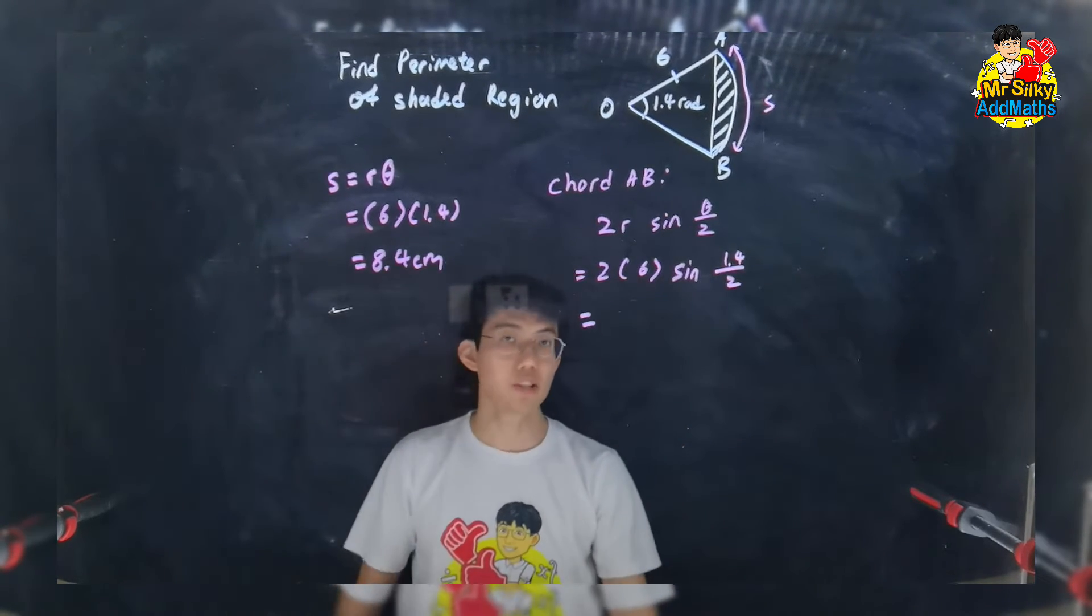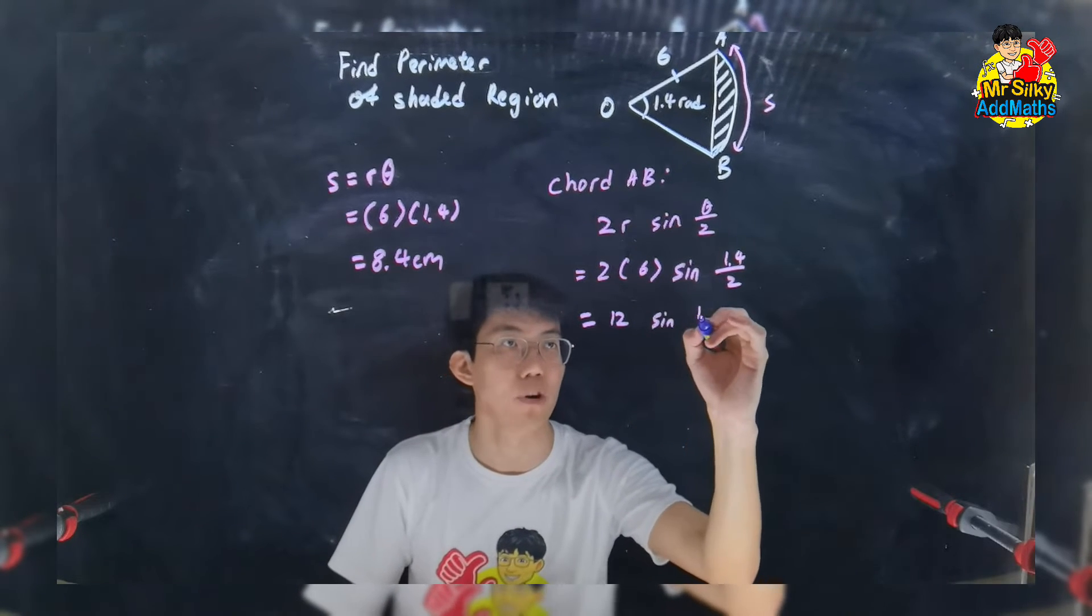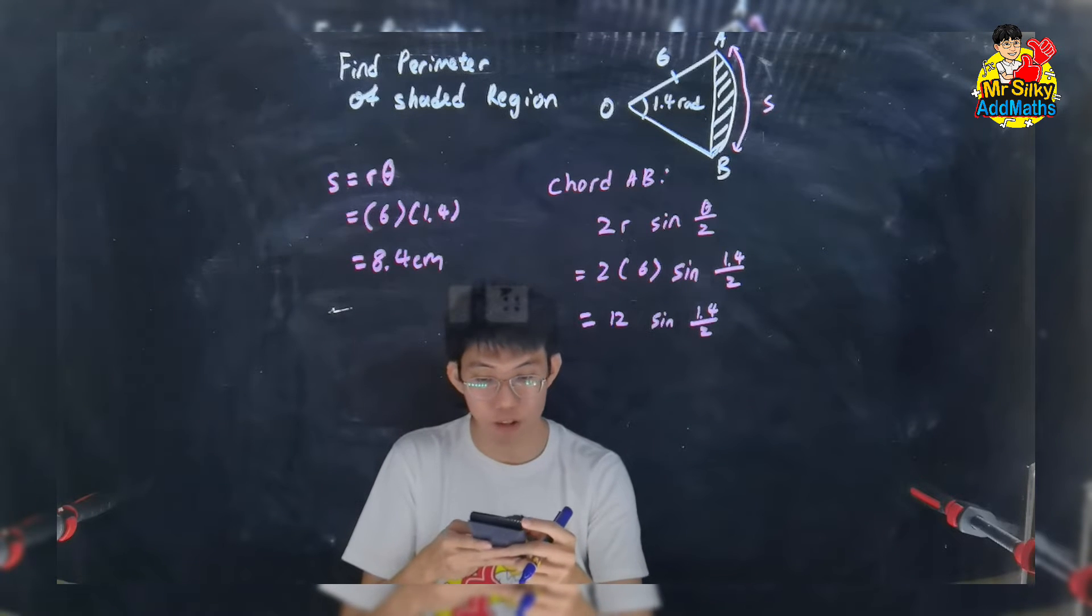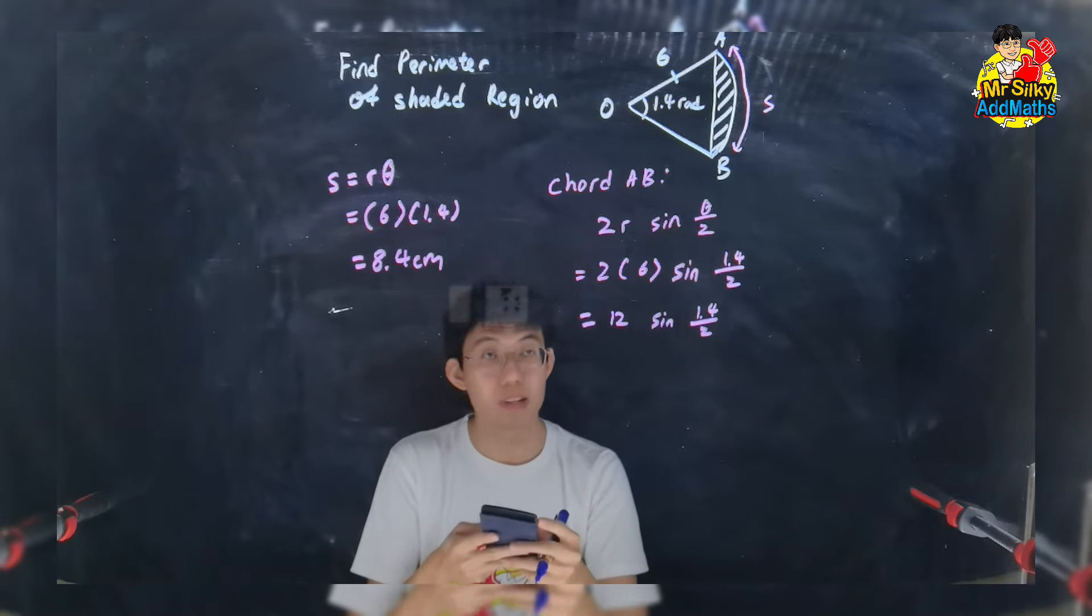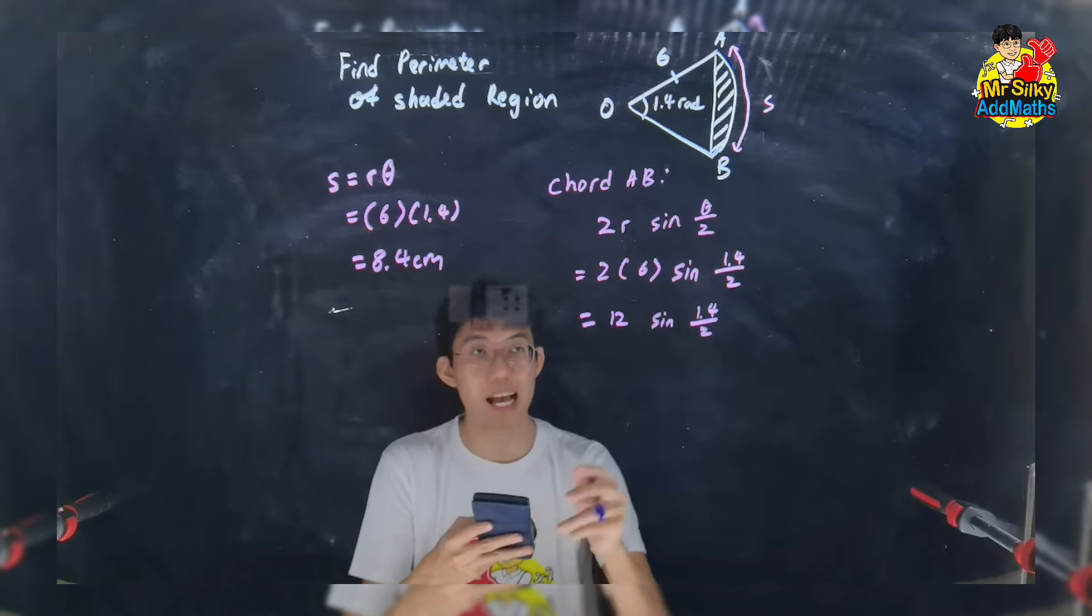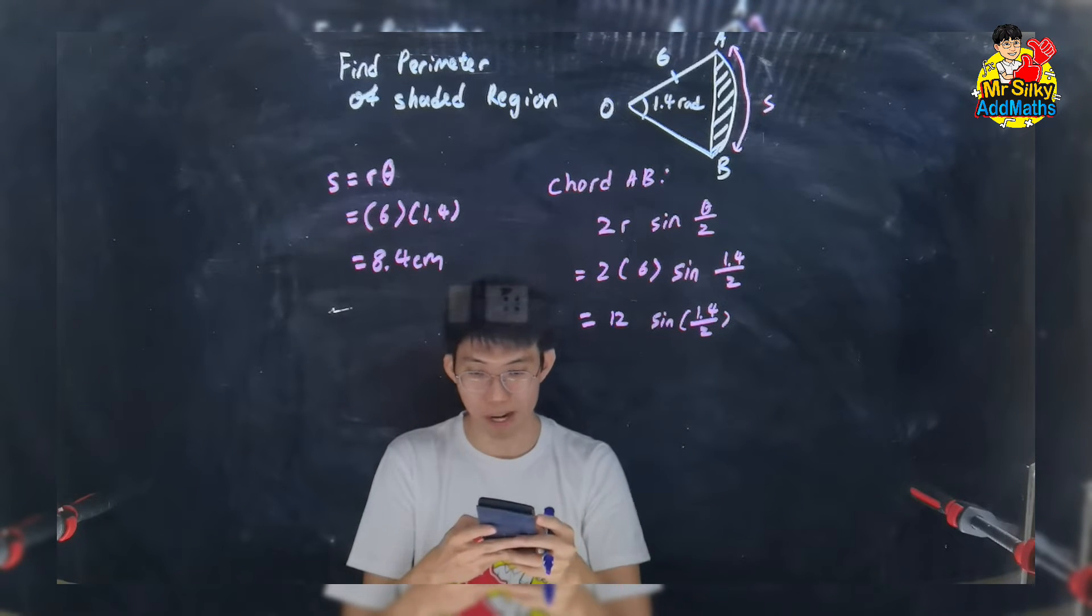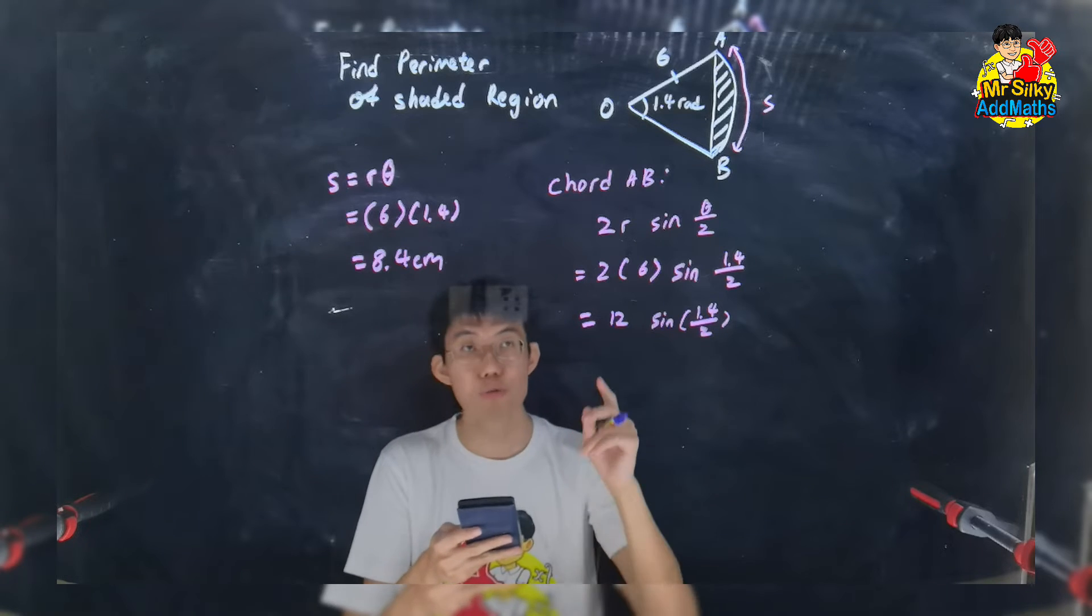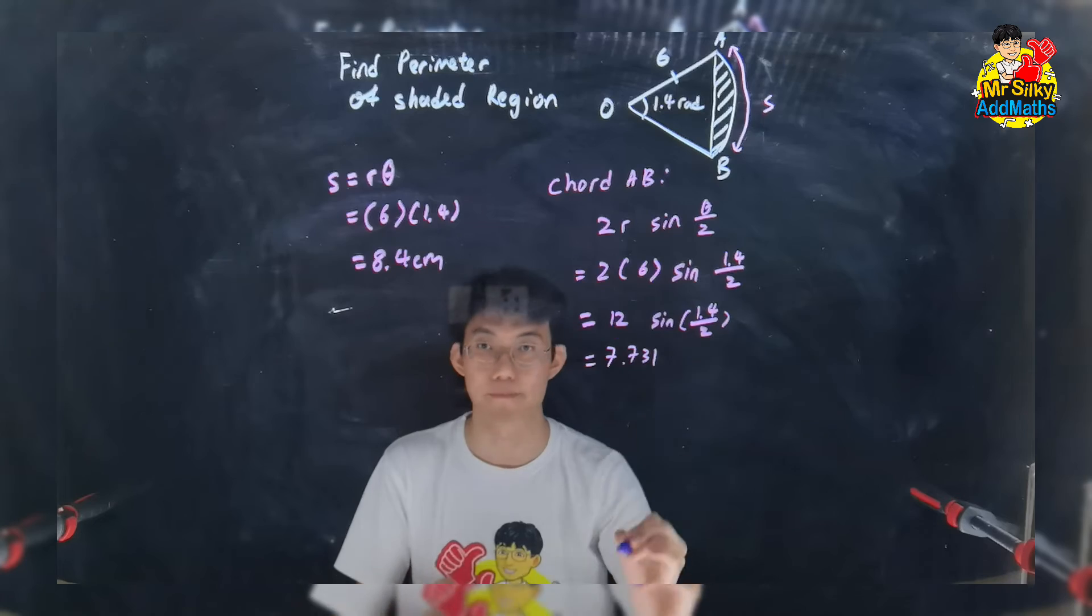Now, when you key into calculator, basically I know this is 12 sin 1.4 over 2. When I try to key in this into calculator, make sure that your calculator is changed into radian mode. Alright, so I will have to press 12 sin. Make sure when you key in the calculator, you have to put the bracket. So bracket 1.4 over 2. You must be getting 7.731 cm.